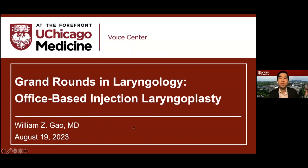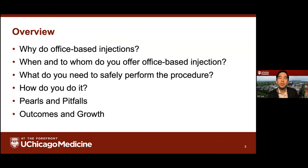Thank you, and it's been a real pleasure working alongside Dr. Baird. For my section, I'm going to focus on office-based injection laryngoplasty — the why, the when, the what, how to do it, some pearls and pitfalls, and outcomes. Office-based awake injection laryngoplasty is a versatile procedure that can treat a large patient population — not just unilateral vocal fold immobility or paralysis, but also atrophy and other disorders of glottic insufficiency.